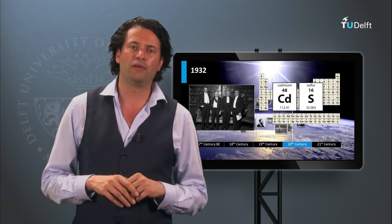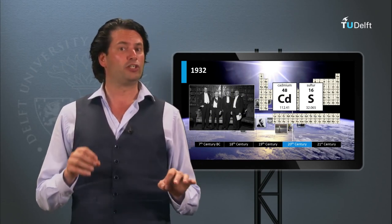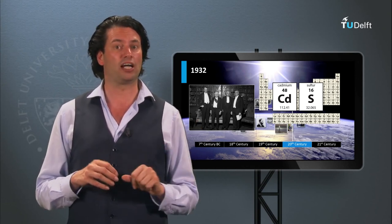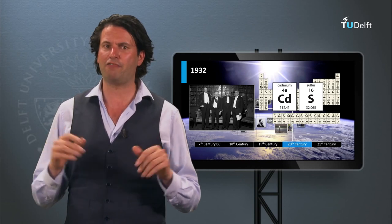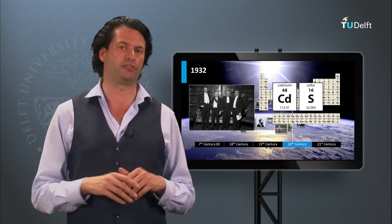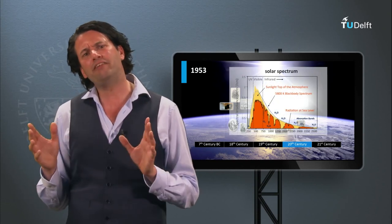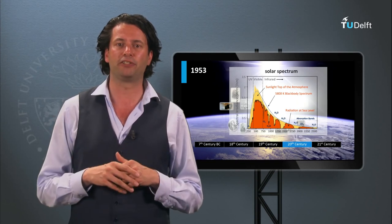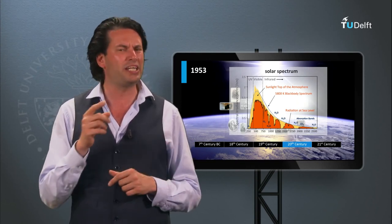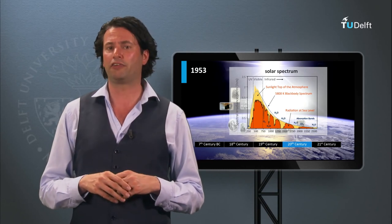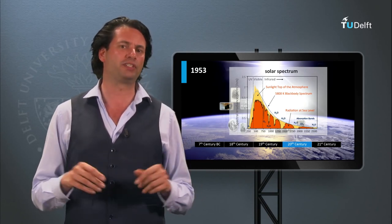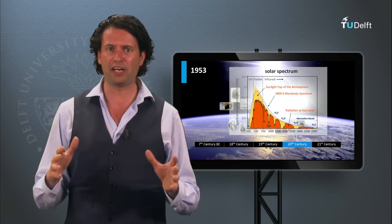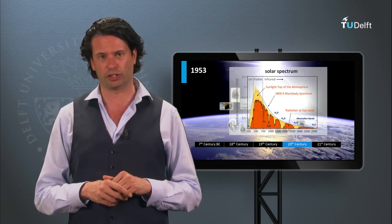In 1932 the photovoltaic effect was discovered in the II-VI semiconductor material cadmium sulfide, by Audobert and Stora. In week 5 we will come back to solar cells based on II-VI materials. It took up to 1953 for the potential performance of solar cells made of various materials with various bandgaps to be estimated. Dr. Dunn Trivich of the Wayne State University performed theoretical calculations in reference to the solar spectrum. In week 3 of this course we will come back to such estimations.